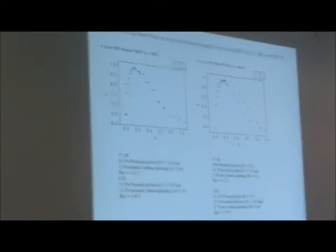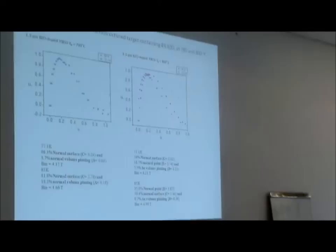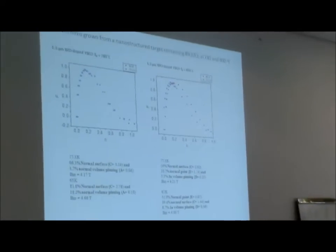Normal surface in most cases is still the dominant. For this one at 65 Kelvin, normal point seems to be the dominant one.